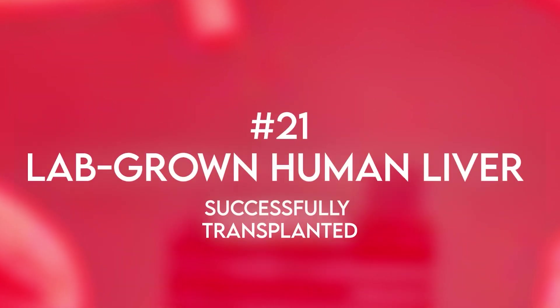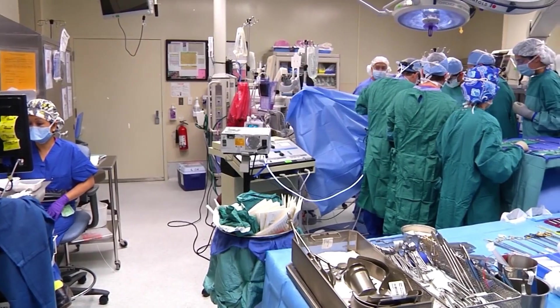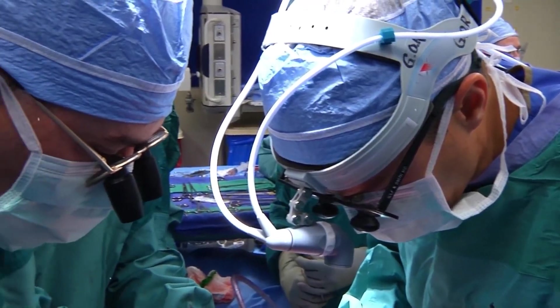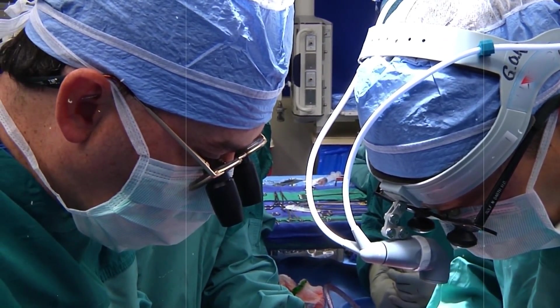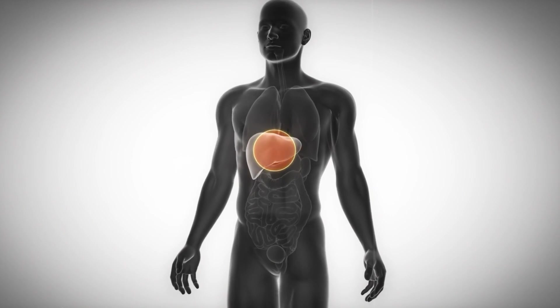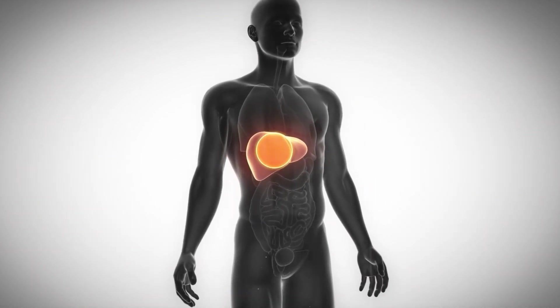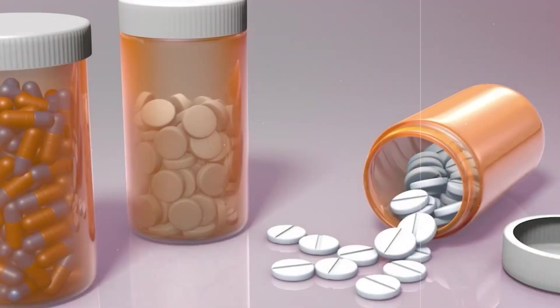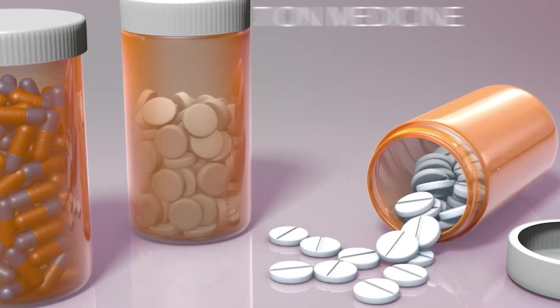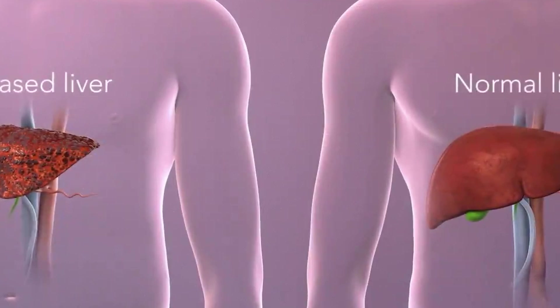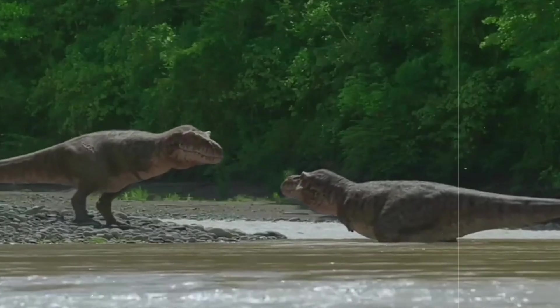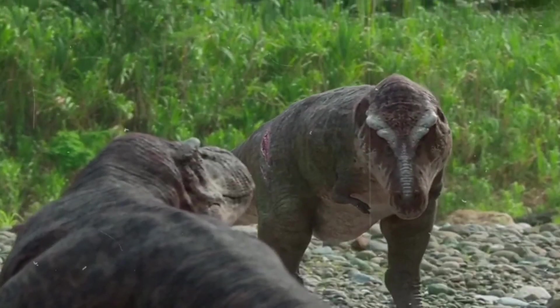Number 21. Lab-grown human liver successfully transplanted. In 2025, a lab-grown liver created from a patient's own stem cells was successfully transplanted. Rejection hazards were eliminated due to the patient's remarkable recovery. This discovery represents a significant advancement in organ engineering and regenerative medicine and gives transplant recipients new hope. But what if T-Rex had an older, meaner cousin? Well, we found it.